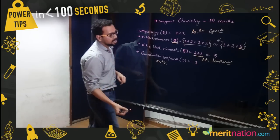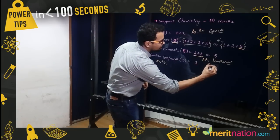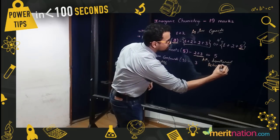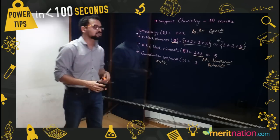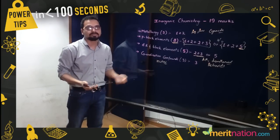In the case of d and f block elements again, properties of actinoids have some different kind of properties, so you should actually be aware of them. You'll get a 2 marks question or something like that.